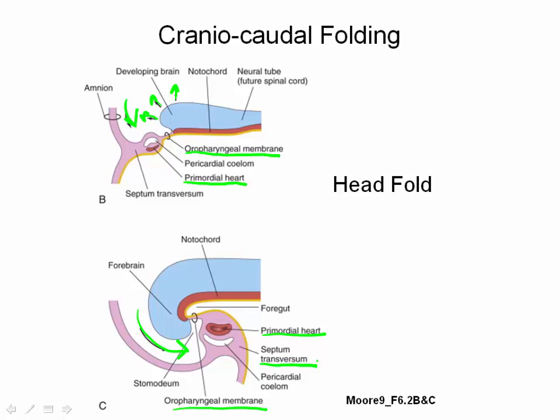A second result of cranial-caudal folding is that development of the head fold will also incorporate part of the yolk sac into the embryo as the foregut. Note that this portion of the yolk sac lies adjacent to the oropharyngeal membrane, or future mouth region. This portion thus gives rise to the upper part of the GI tract, otherwise known as the foregut, as well as accessory organs of the GI tract.